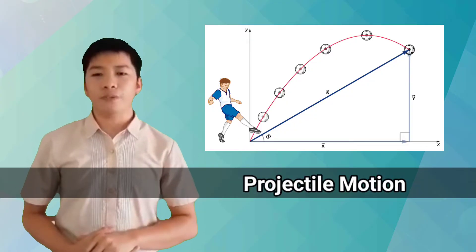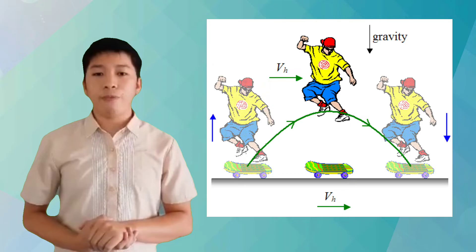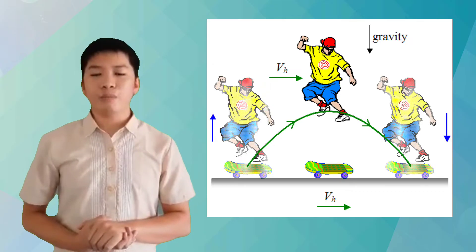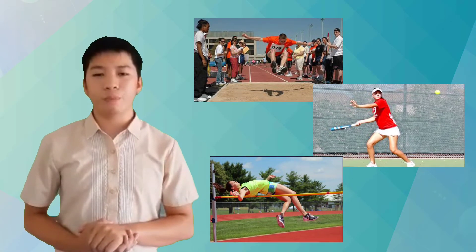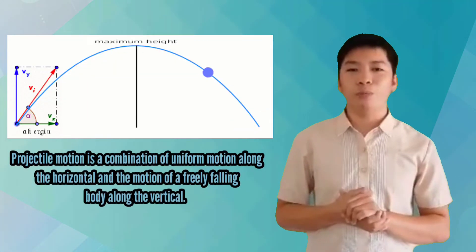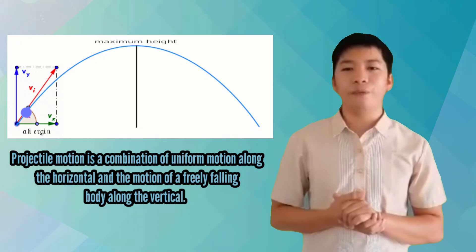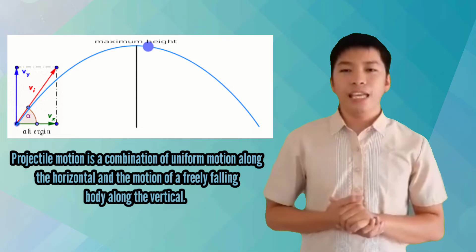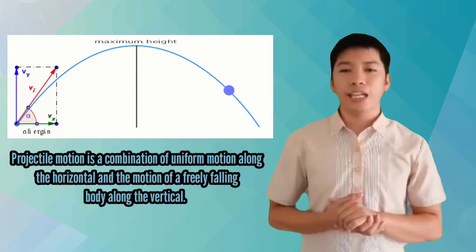Not only balls fly when in projectile motion. Have you noticed that in many sports and games, players come flying too? Understanding motion in two dimensions will help you apply the physics of sports and enhance game event experiences. Projectile motion is a combination of uniform motion along the horizontal and the motion of a freely falling body along the vertical. It is an instance of uniformly accelerated motion in two dimensions.